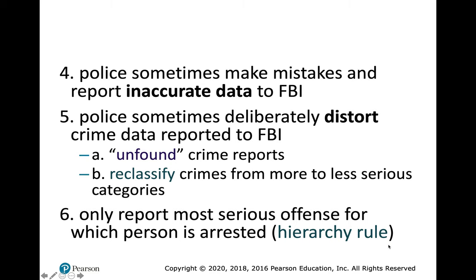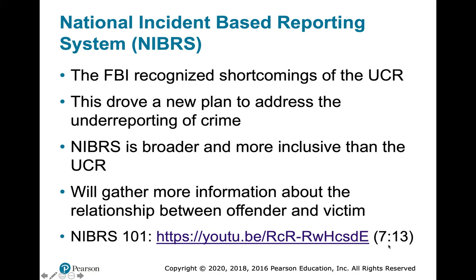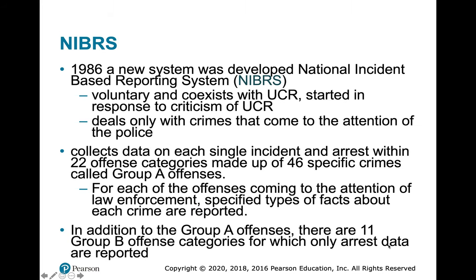To correct some of these shortcomings, the FBI implemented the National Incident-Based Reporting System — NIBRS. This gathers much more information, is voluntary, and coexists with the UCR. By 2021, every state will have to report data this way. NIBRS has Group A — 22 offense categories made up of 46 specific crimes — covering many more crimes than the UCR. For example, statutory rape cannot be tracked in the UCR but can be tracked in NIBRS.